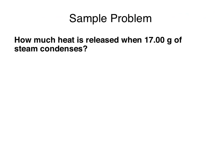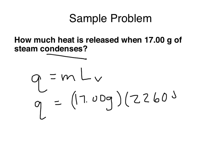Let's look at a sample problem. How much heat is released when 17 grams of steam condenses? Notice how there is no mention of a temperature change. So, Q equals MC delta T is out. And also notice this word condenses. That's a phase change. So, Q equals M times, and because it's condensation, we're going to use the heat of vaporization. And all we need to do is look up the heat of vaporization for water. 2,260 joules per gram.